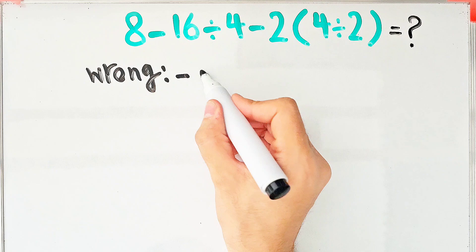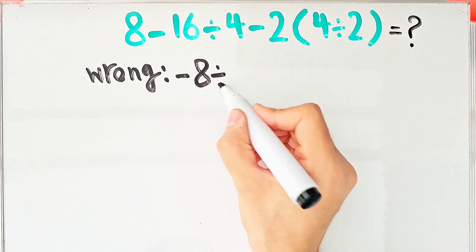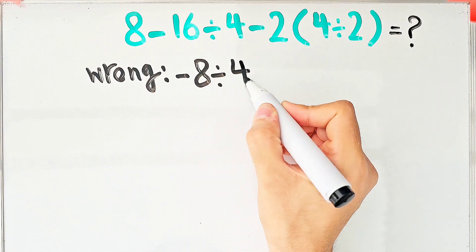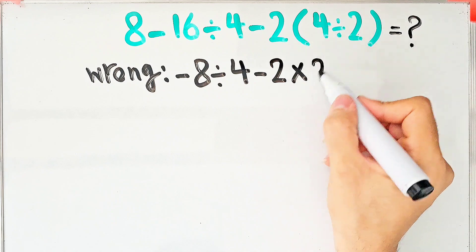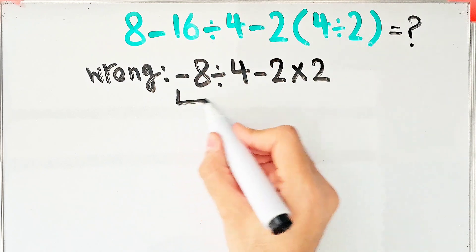8 minus 16 equals negative 8. Negative 8 divided by 4 minus 2 then times 4 divided by 2 that equals 2. Negative 8 divided by 4 equals negative 2.